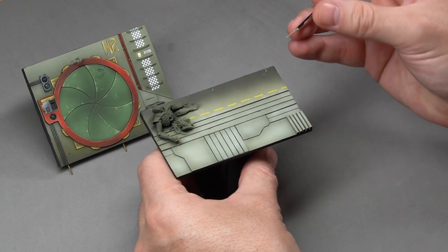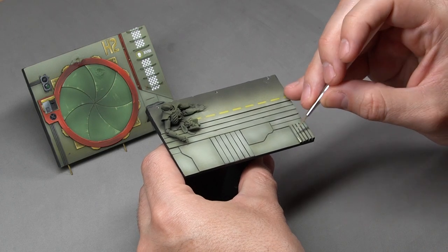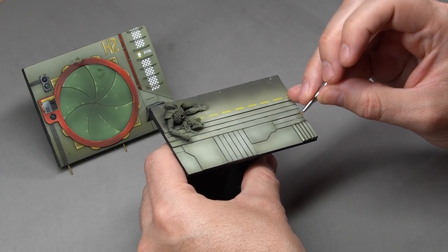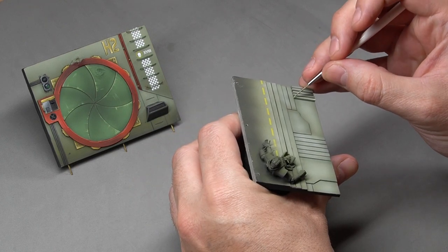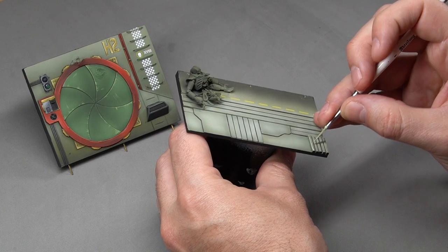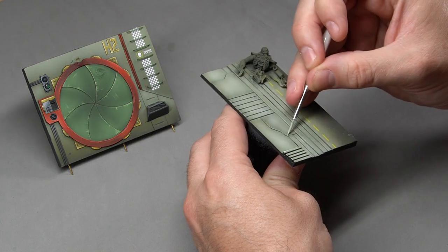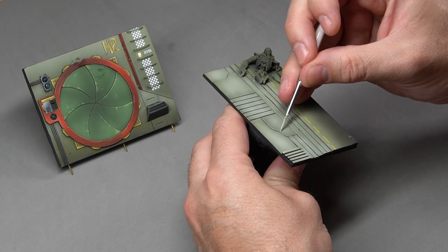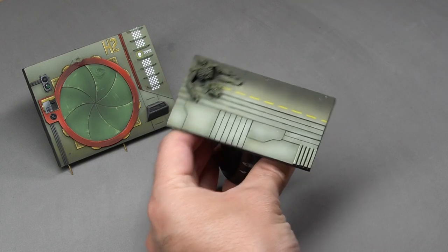To create the outlines, we use the edge of the brush, and we can carefully start outlining. If we go outside the lines, it's okay. We can even create some chipping or scratches. As you can see, using the edge of the brush makes it much simpler to do this than using the tip.